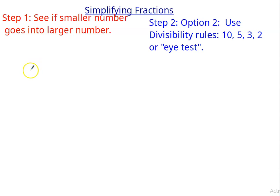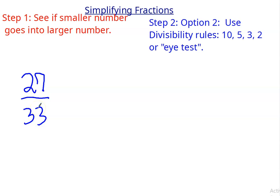How about 27 over 33? Does the 10 rule work? No — they don't both end in 0. Does the 5 rule work? No — they don't end in 5 or 0.